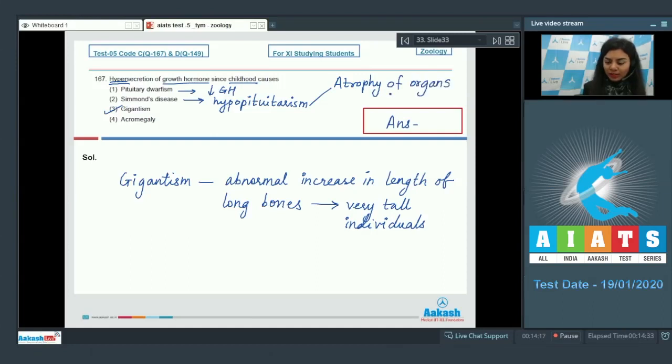The internal organs like heart, liver, spleen undergo atrophy. Option number four, acromegaly, results when there is excess of growth hormone in adults. The correct option here is option number three, gigantism.